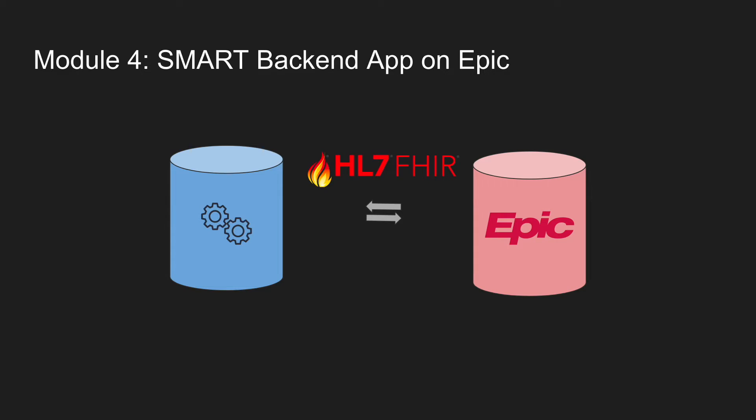In module four, we will work with a SMART backend application on Epic, where we will learn about JWT authentication, FHIR bulk APIs, and how your app can run in the background without ever needing user interaction.